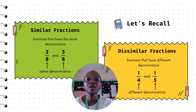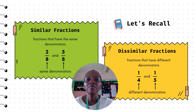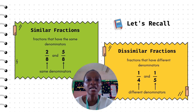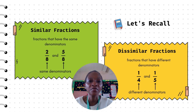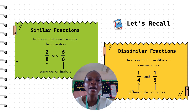Now let's recall similar and dissimilar fractions, or you can call them like and unlike fractions. Similar fractions are fractions that have the same denominators. For example, 2 over 8 and 5 over 8 — they both have 8 as their denominators, so they are similar fractions. Dissimilar fractions are fractions that have different denominators. For example, 1 over 4 and 1 over 5 — the 4 and the 5 are different denominators, so that makes them dissimilar or unlike.